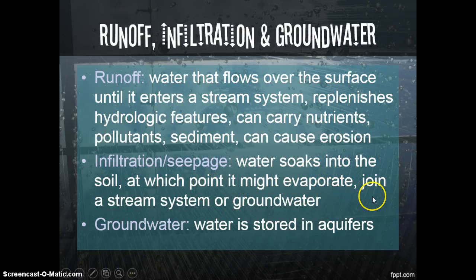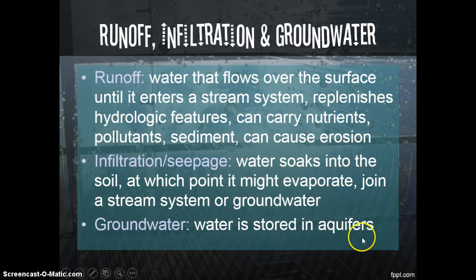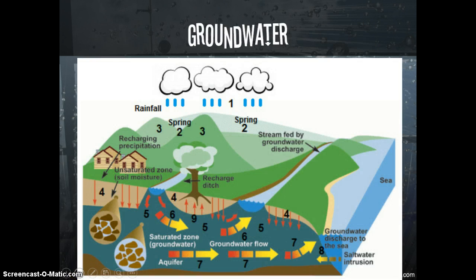If water doesn't run off over the surface, it will infiltrate — seeping down into the soil. A couple of things can happen: it might evaporate back into the atmosphere if it stays close to the surface, or it could join the stream system or the groundwater. If it makes it down into the groundwater, this is a complex underground system — almost like underground rivers and large bodies of water that we call aquifers. What you need to know for now is that when water seeps in, it does eventually make it down to the groundwater.